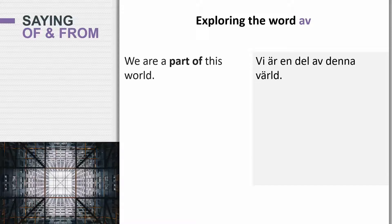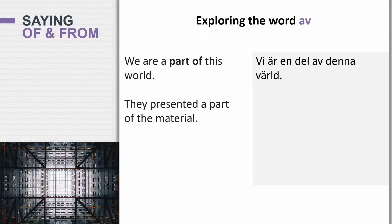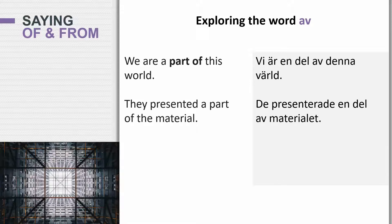Vi är en del av denna värld. So 'this' is denna — or it could be detta. In this case it's denna because värld is en värld. And 'they presented a part of the material' — Dom presenterade en del av materialet. Material is material, and it's ett material.